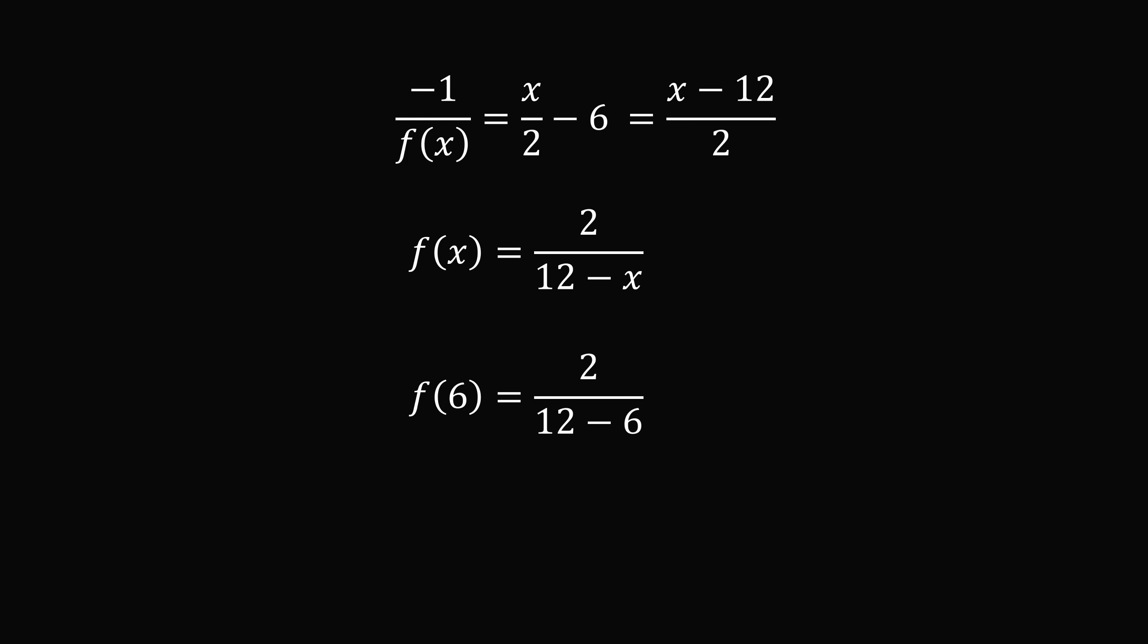We just substitute x is equal to 6. So we get f(6) is equal to 2 over 12 minus 6. That's equal to 2 over 6, which simplifies to be 1 over 3. And that's the answer!